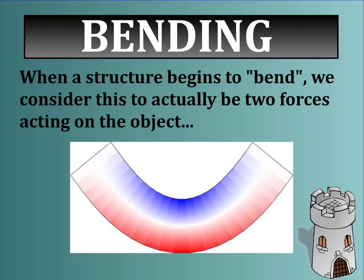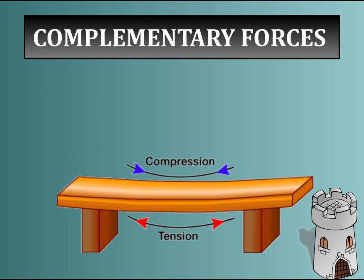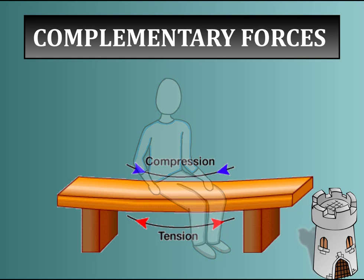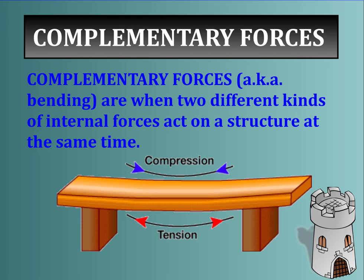The third type of force is bending. When a structure begins to bend, we consider this to be two forces acting on the object at the same time — complementary, or bending forces. If I sit on this bench, it bends a little bit. On the top there is compression — it's squeezing together on the top as I add pressure. At the same time, on the bottom, the material begins to sag and there's tension — the wood is beginning to pull apart. So both compression and tension act together to form bending, or complementary forces.